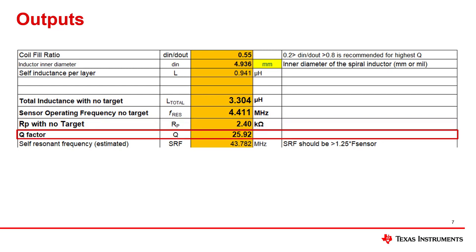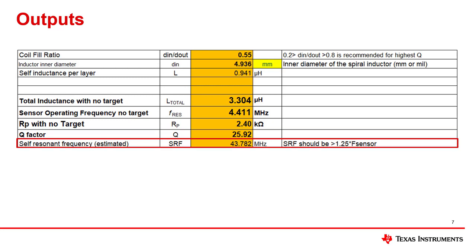Next is the Q factor. Having a high Q factor is important for better sensor performance. My design has almost 26 for the Q factor, so there's no need to change anything. Lastly is the self-resonant frequency, or SRF. This is estimated based on the capacitor and inductor combination and should be larger than 1.25 times the sensor frequency to maintain good performance. My design has an SRF of 43.782 MHz, which is well above the operating frequency of this coil.